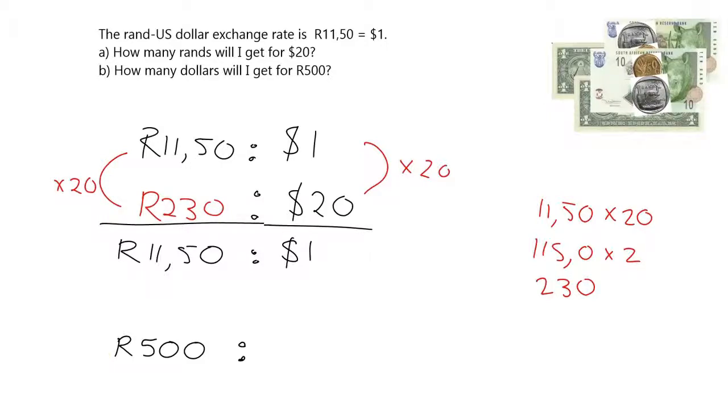What I'm going to do is just take it one step, put one step in the middle, which will make it a whole lot easier. What I can do is say, look, what will be easy is if I can figure out what 1 rand is worth. If I can figure out what 1 rand is worth, then it will be very easy to get 500 rand because I'll just multiply by 500. How do I get what 1 rand is worth? Well, what did I do from R11.50 to get to 1 rand? I had to divide by R11.50.